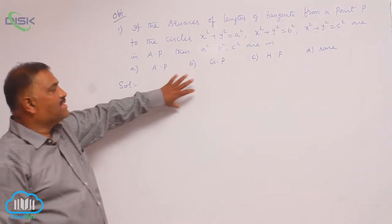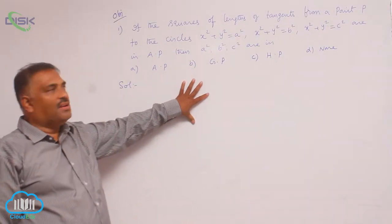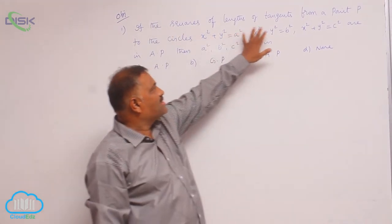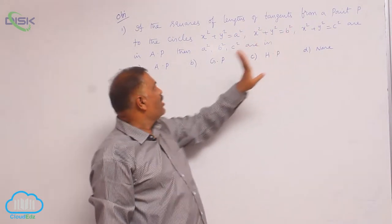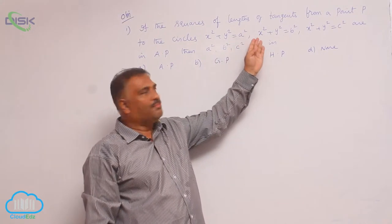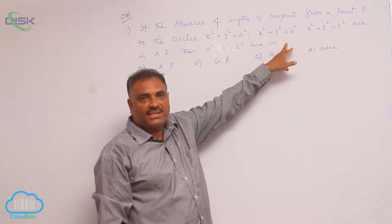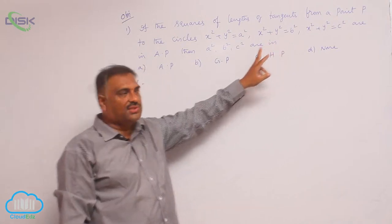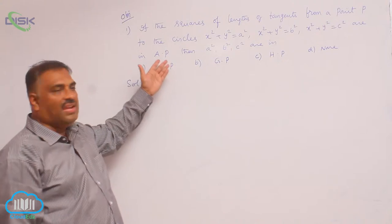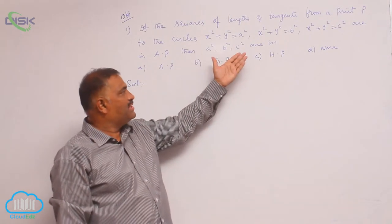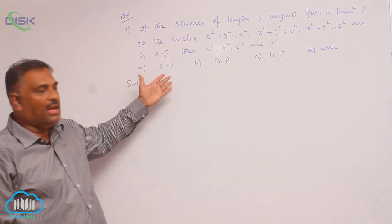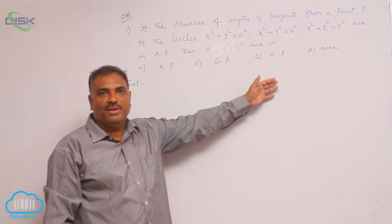Based on the length of tangent, let us discuss one objective problem. If the squares of lengths of tangents from a point P to the three circles x² + y² = a², x² + y² = b², x² + y² = c² are in AP, then a², b², c² are in — options are AP, GP, HP, and none.